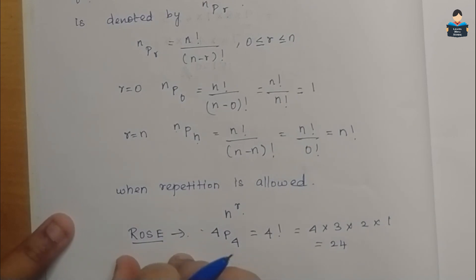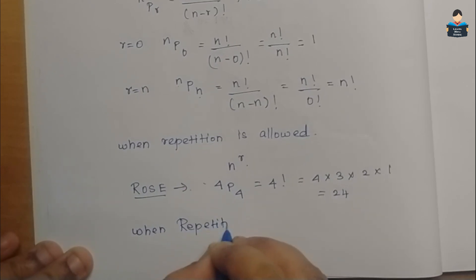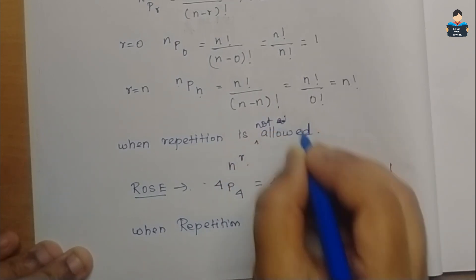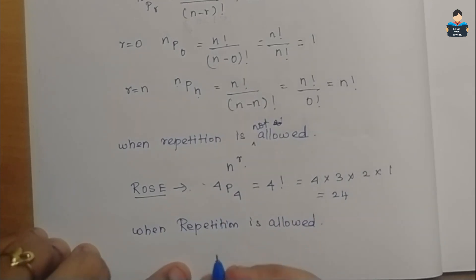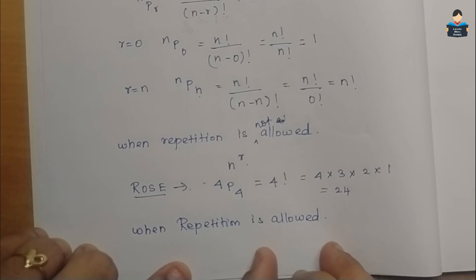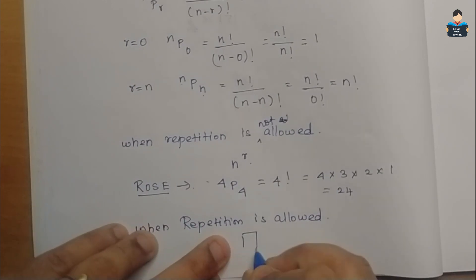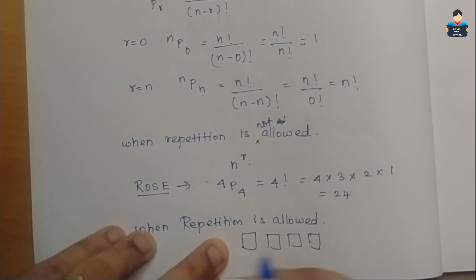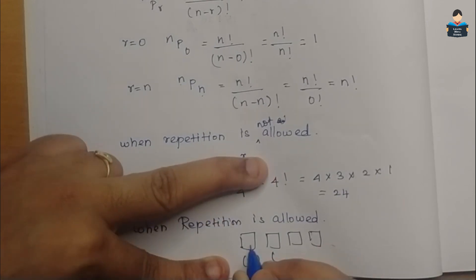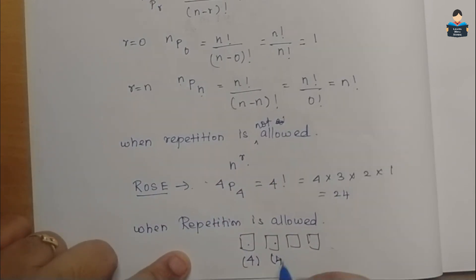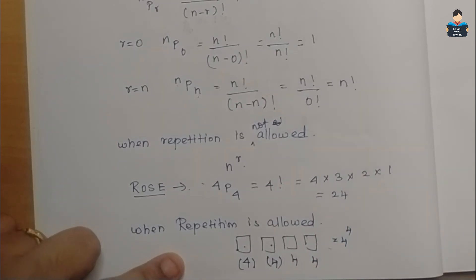When repetition is allowed, in 4 places with 4 letters, each place can be filled by any of the 4 letters. So that is 4 to the power 4, which equals 256.